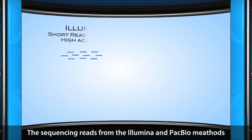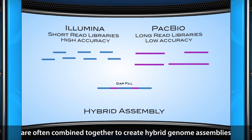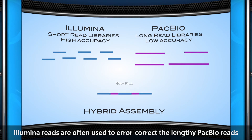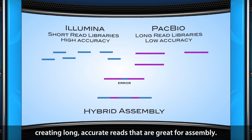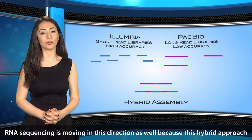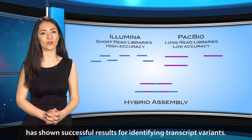The sequencing reads from the Illumina and PacBio methods are often combined together to create hybrid genome assemblies for DNA sequencing. Illumina reads are often used to error-correct the lengthy PacBio reads, creating long, accurate reads that are great for assembly. RNA sequencing is moving in this direction as well, because this hybrid approach has shown successful results for identifying transcript variants.